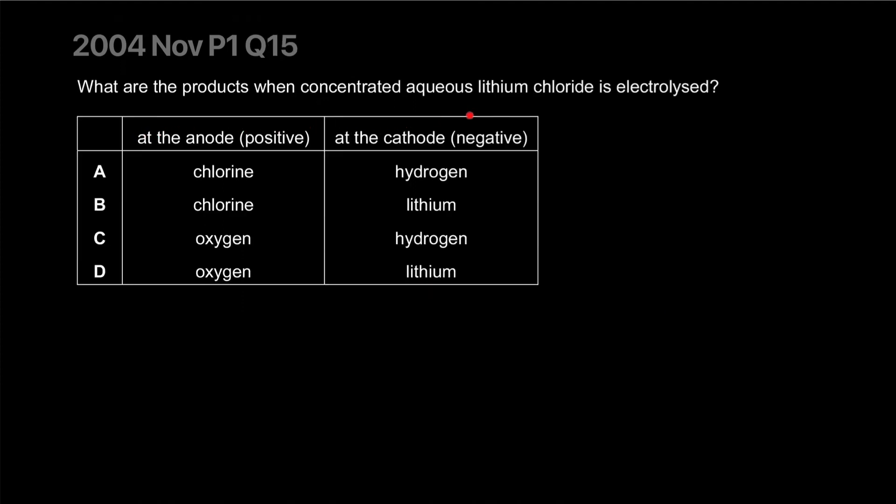What are the products when concentrated aqueous lithium chloride is electrolyzed? It's aqueous and concentrated. We have lithium plus and hydrogen plus, and at the anode we have the hydroxide ion and the chlorine ion. What will discharge at the cathode? Lithium is a reactive metal being a group one metal, so hydrogen will be released.